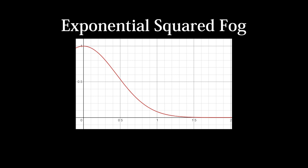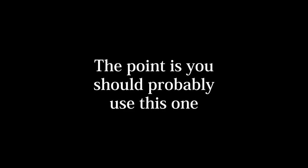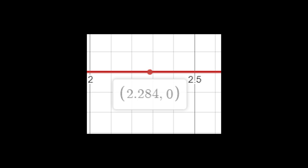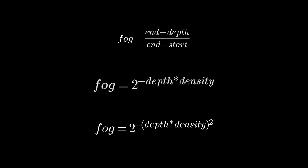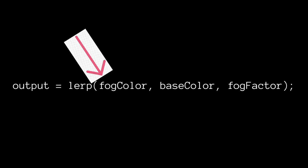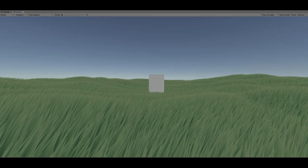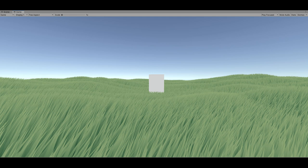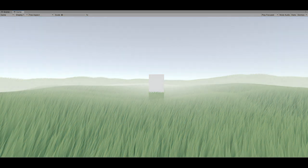Exponential squared fog — I think you get it at this point. It's the same as the previous formula, but you square the depth times density before you use it as a negative exponent. This formula is nice because it has less fog at close range, but it gets stronger much faster, and unlike exponential fog, does actually reach 0, so the fog will become fully opaque. Regardless of what fog factor calculation you use, we use it as an interpolator between the original pixel color of our render and the fog color. So with our effect completed, we can now see our wonderful fog in Unity, and… it doesn't work!